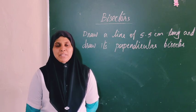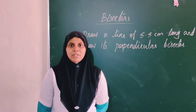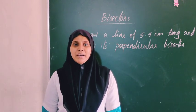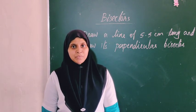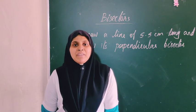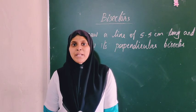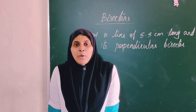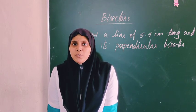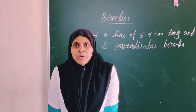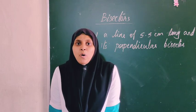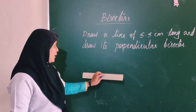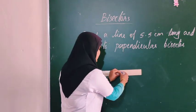We need to draw a line of 5.5 centimeters. The midpoint of 5.5 centimeters is 2.75. We need to find the midpoint using a compass. First we have to draw a line of length 5.5 centimeters.